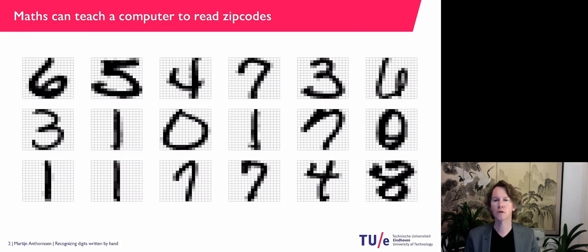And some of them are easy to recognize so it starts with 6, 5, 4, 7 and so on. But you already see that the last one on the top line is probably 4, could also be a 6. So it can be quite hard to recognize them.